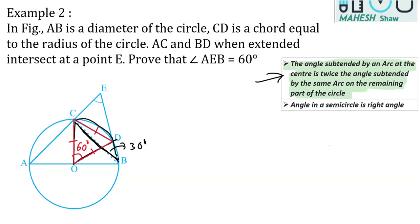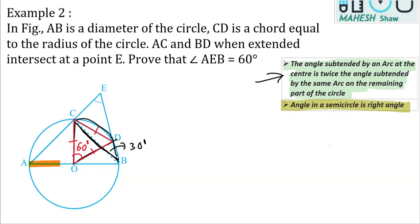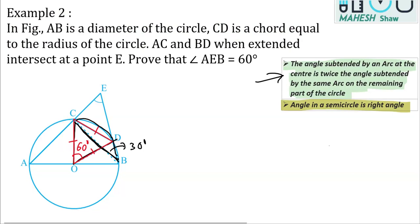The next property we use is the angle in a semicircle. The angle subtended by the diameter is a right angle. The diameter AB is subtending an angle at C, so angle ACB is 90 degrees — that is the angle in a semicircle. By linear pair, we can also write the adjacent angle as 90 degrees.